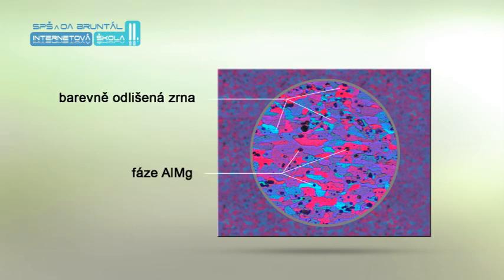In this strip image, grains are color-differentiated and observation is performed in polarized light. Polarized light is obtained by birefringence using Nicol prism and is used when monitoring single-phase structures like aluminum and its alloys to enhance contrast of individual grains. The black dots we see in the image are aluminum-magnesium phase and these images are used to evaluate grain size according to customer requirements.